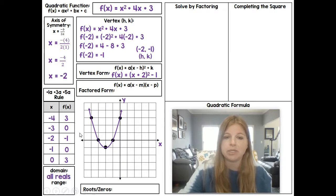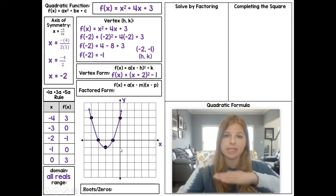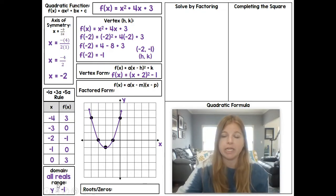I can then figure out my domain. Remember, domain for all of these parabolas, it's always going to be all reals. Your range is about your y values. So notice this graph starts on the y axis at a -1, and then it's everything above -1. So my range would be y ≥ -1.